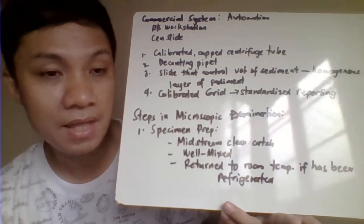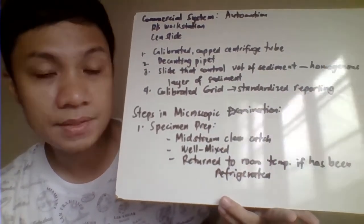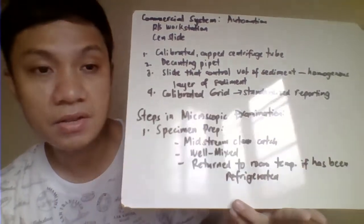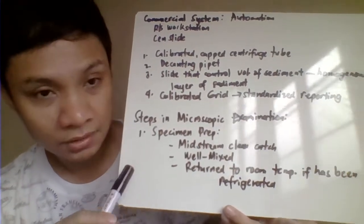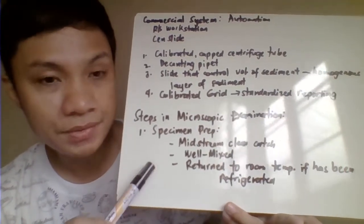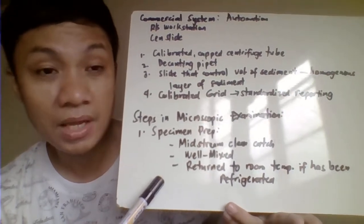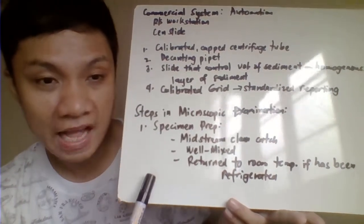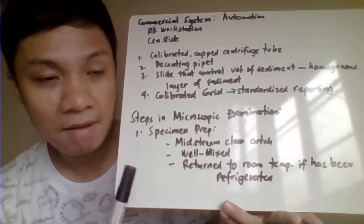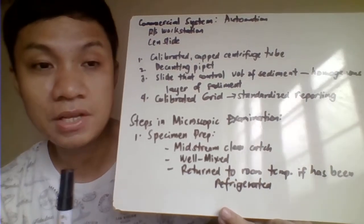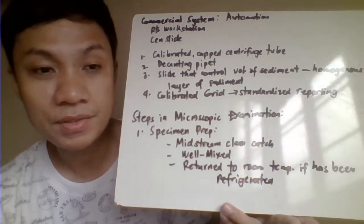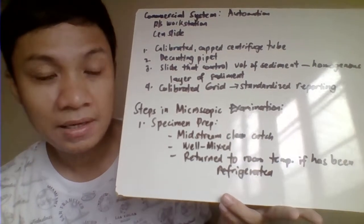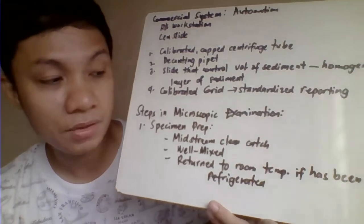Here is the outline of steps in the preparation of our sediments for microscopic identification. The first is specimen preparation. Basically, we are required to collect a specimen that is a midstream clean catch, and this should be first morning urine. First morning urine is always a concentrated urine sample that really provides an accurate concentration of your sediments present in the urine sample.